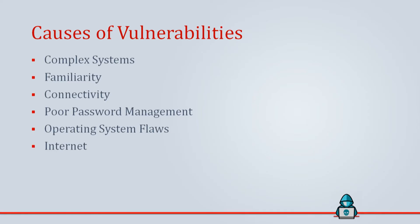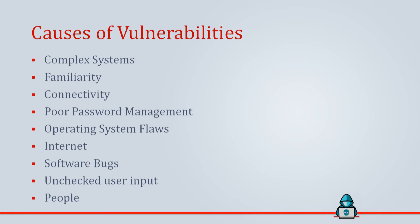Internet: the internet is full of spyware and adware that can be installed automatically on computers. Software bugs: programmers can sometimes accidentally leave an exploitable bug in the software. Unchecked user input: if software or a website assumes that all input is safe, it may run unintended SQL commands. People: social engineering is the biggest threat to the majority of organizations, so humans can be one of the biggest causes of vulnerability.